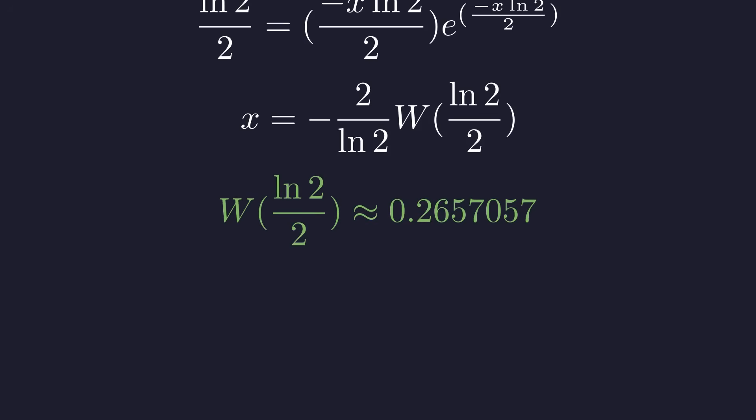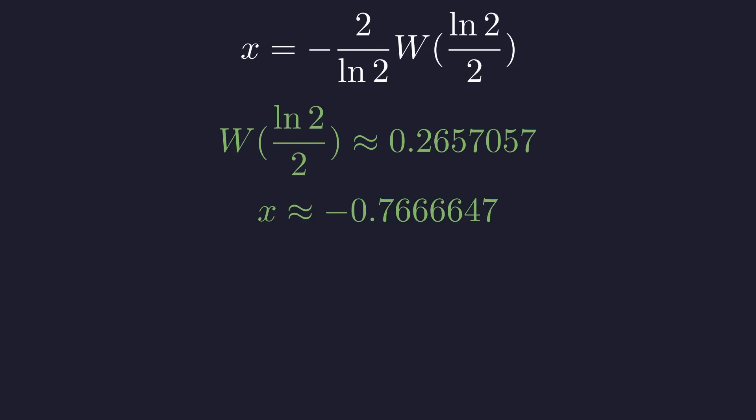For the numerical value, we can compute that W of natural log of 2 over 2 is approximately 0.2657. Plugging this back in gives us our final answer, approximately negative 0.7667.